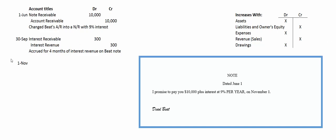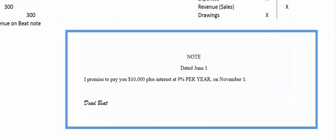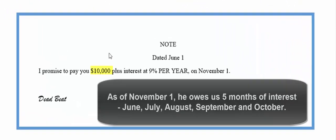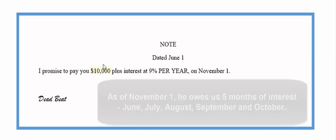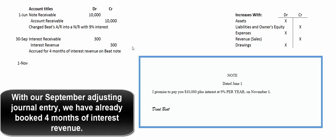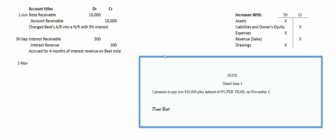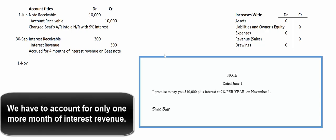Another month has gone by — it's November 1st, so October has passed. It's time for him to pay. He's going to pay the original principal amount of $10,000 plus five months worth of interest: June, July, August, September, October. We've already accounted for four months of that interest revenue, so we only have to account for one more month — $75 more.